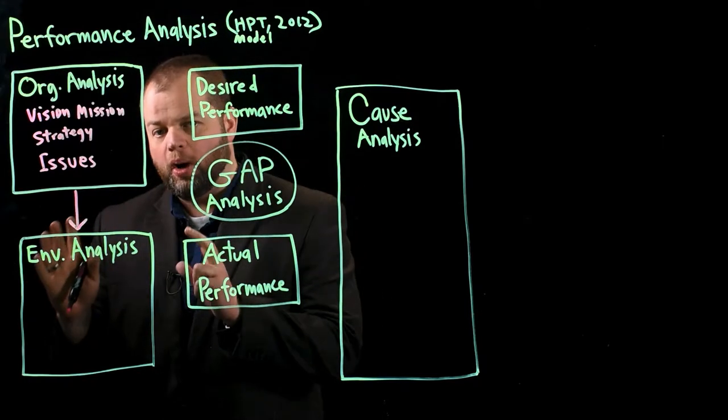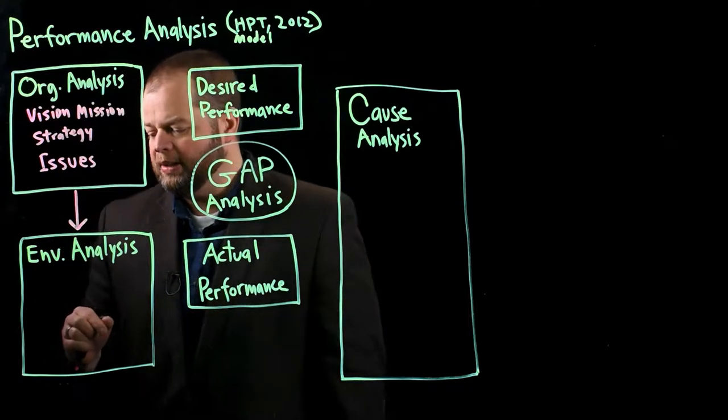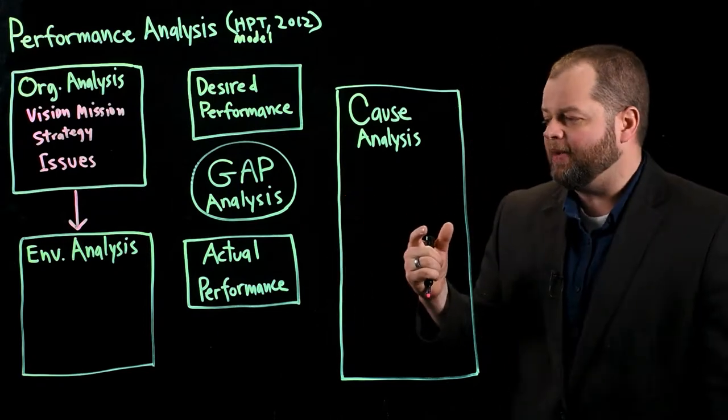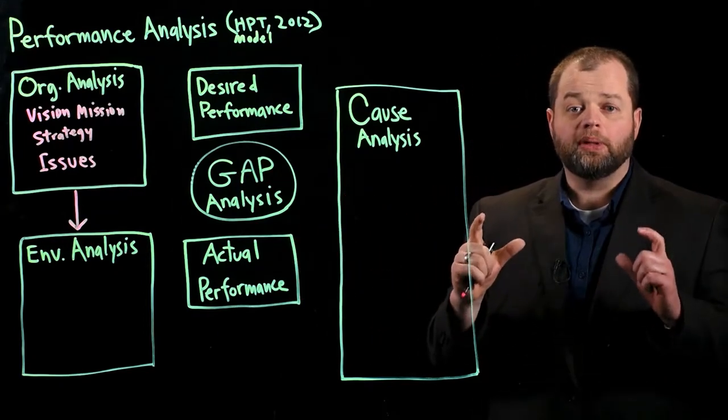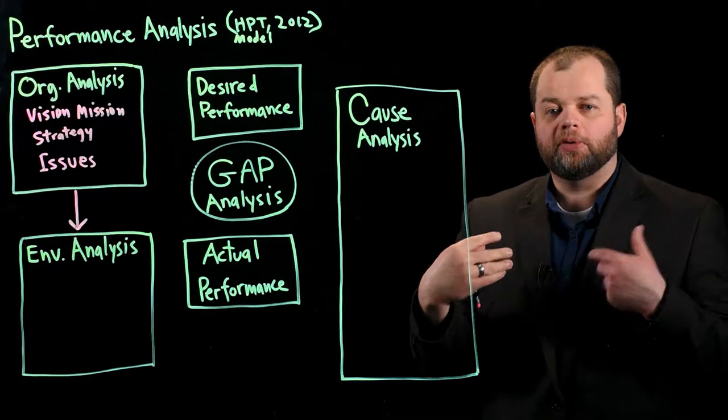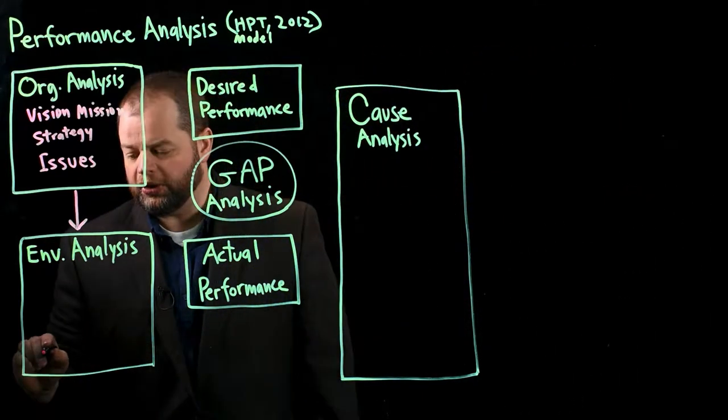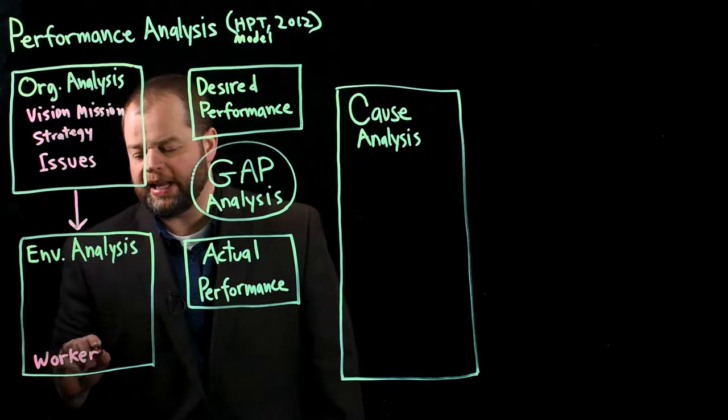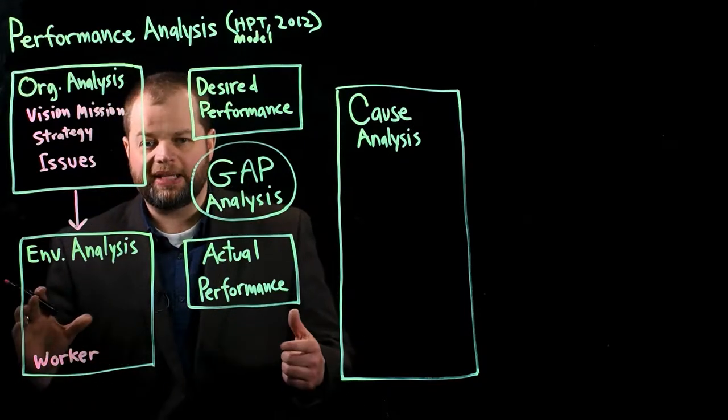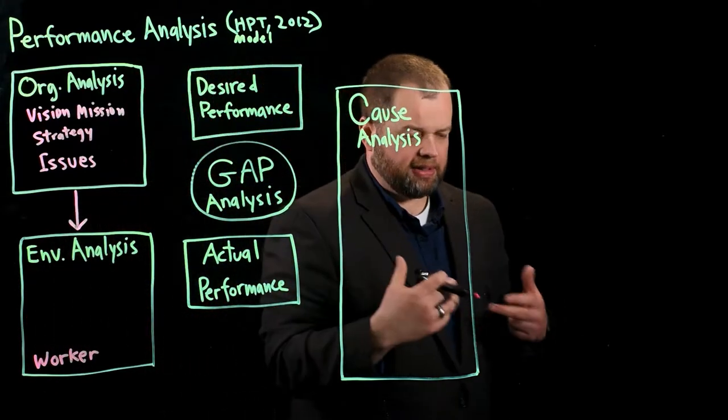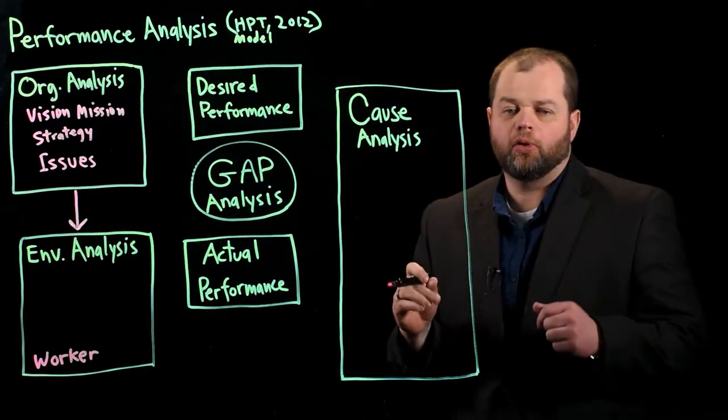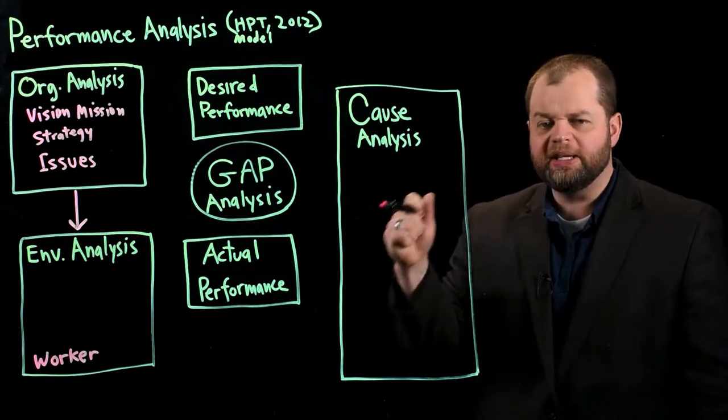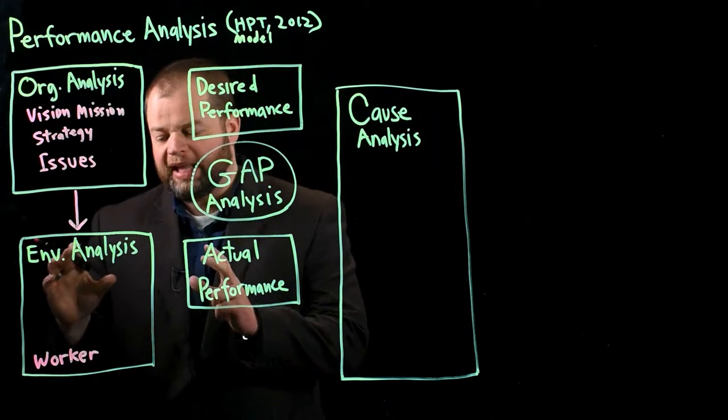And this is where you really try to quantify and understand what's going on in the organization. And so there are different levels that you might think about when you're doing an environmental analysis. The first one that we think about, particularly as learning professionals, is the actual worker, the performer that we're thinking about. So if you are working, for example, in a training setting, and you have a bunch of trainers that are helping to train on a specific topic, those trainers' performance is who you're thinking about, how can we help these trainers perform really effectively.